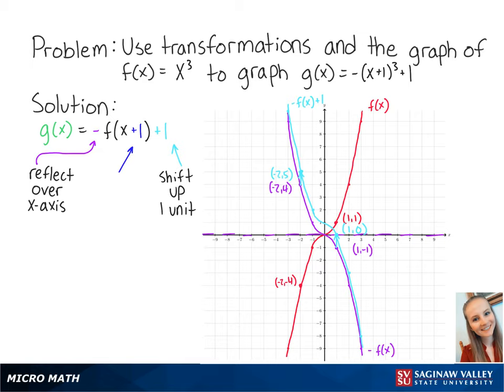Adding 1 to x means that we will shift the new graph to the left by 1 unit. So our new points are at -3, 5, and 0, 0. Connecting the points, we get the graph of g(x). And this is the final answer.